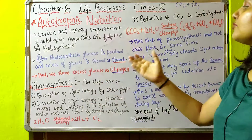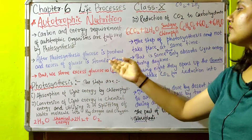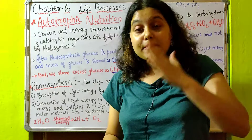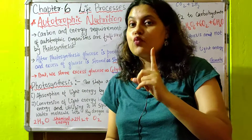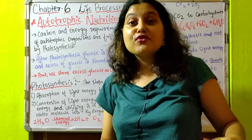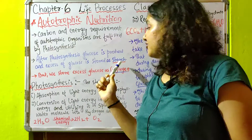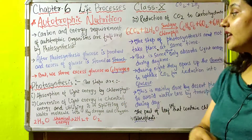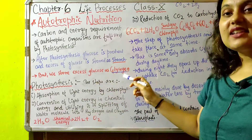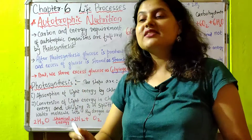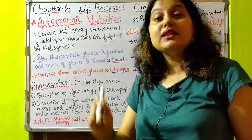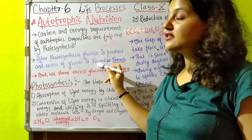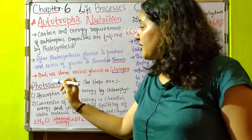After photosynthesis, glucose is produced. The plant does not use all the glucose at once, and the excess glucose is stored in the form of starch. So the energy reserve in plants is starch. In contrast, we store excess glucose as glycogen — so the energy reserve in humans is glycogen. Most animals store excess glucose as glycogen, while plants store it as starch.